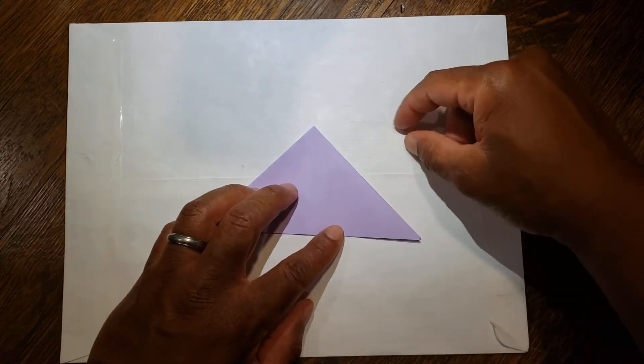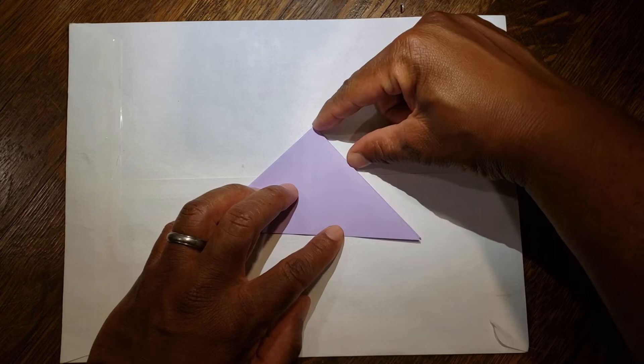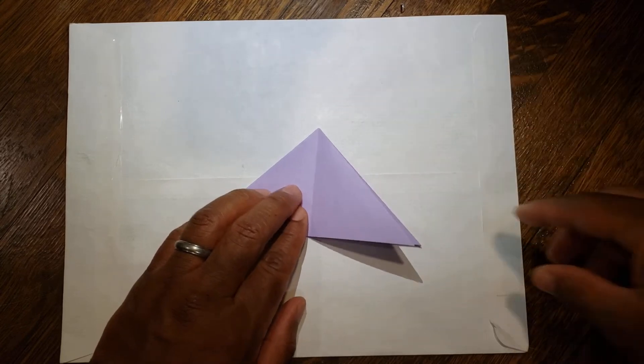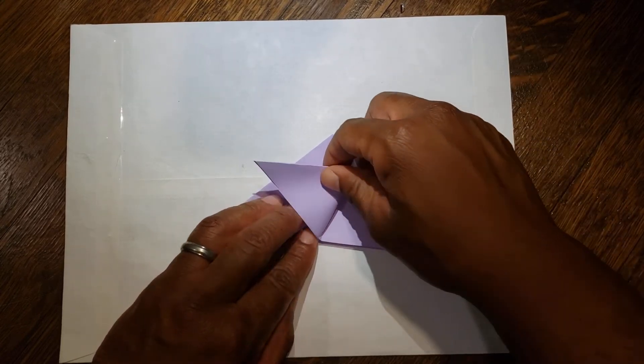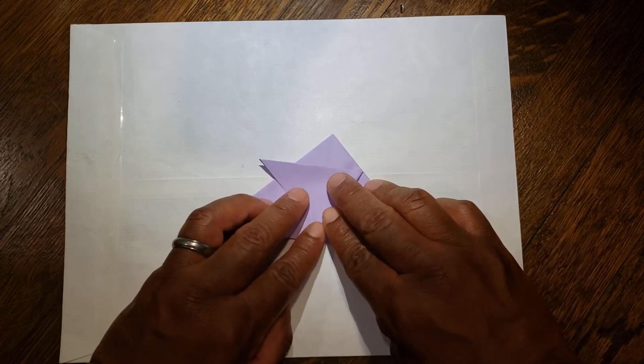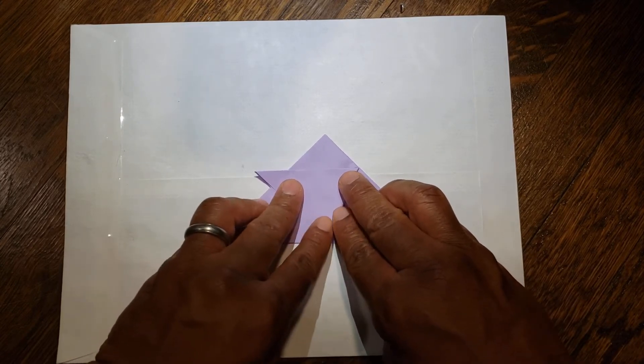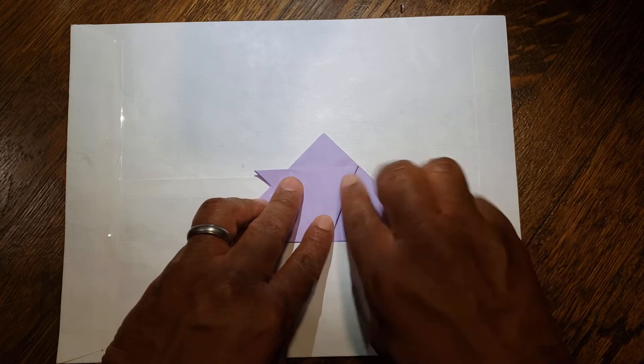From here, pick a point about an inch or so from the top. You can take your right flap and fold it over so it makes a straight line going across.